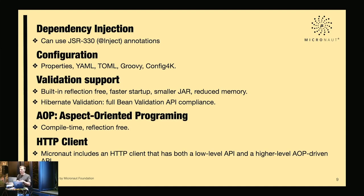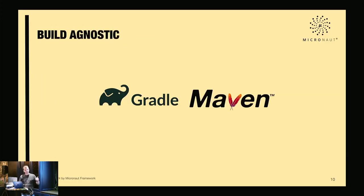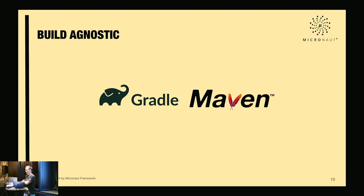There's a built-in HTTP client using an interface/repository pattern: annotate an interface with @Client, declare methods with @Get or @Post, and at compilation time Micronaut provides the implementation. A low-level client is also available. For build tools, Gradle and Maven are both supported with official plugins; Micronaut uses standard annotation processor capabilities so the plugins are optional, though they add extra capabilities.